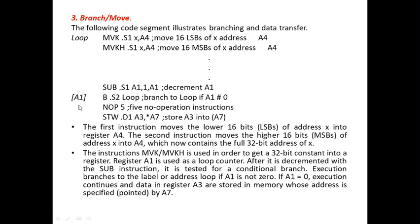Register A1 is used as a loop counter. After further operations are performed, A1 is decremented — subtracted by 1 — and the result is stored back in A1. It is then tested for a conditional branch using the S2 unit. Execution branches to the label or address loop if A1 is not equal to 0. If A1 equals 0, execution continues and data in register A3 are stored in memory whose address is pointed to by A7.